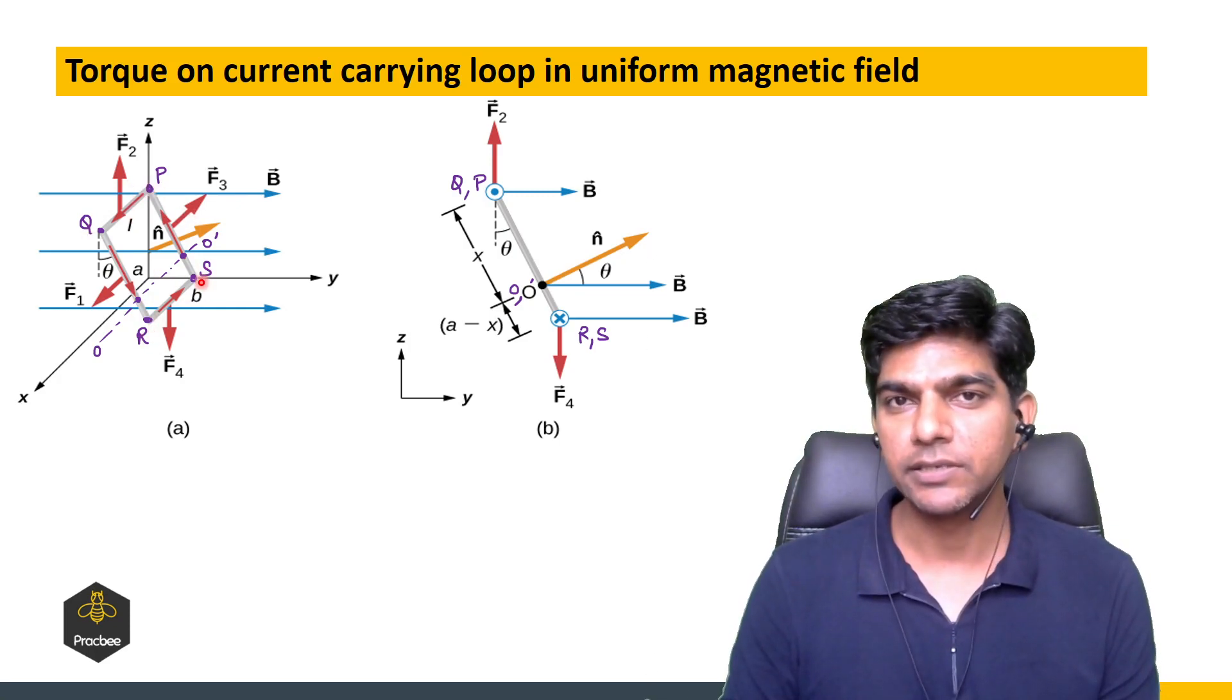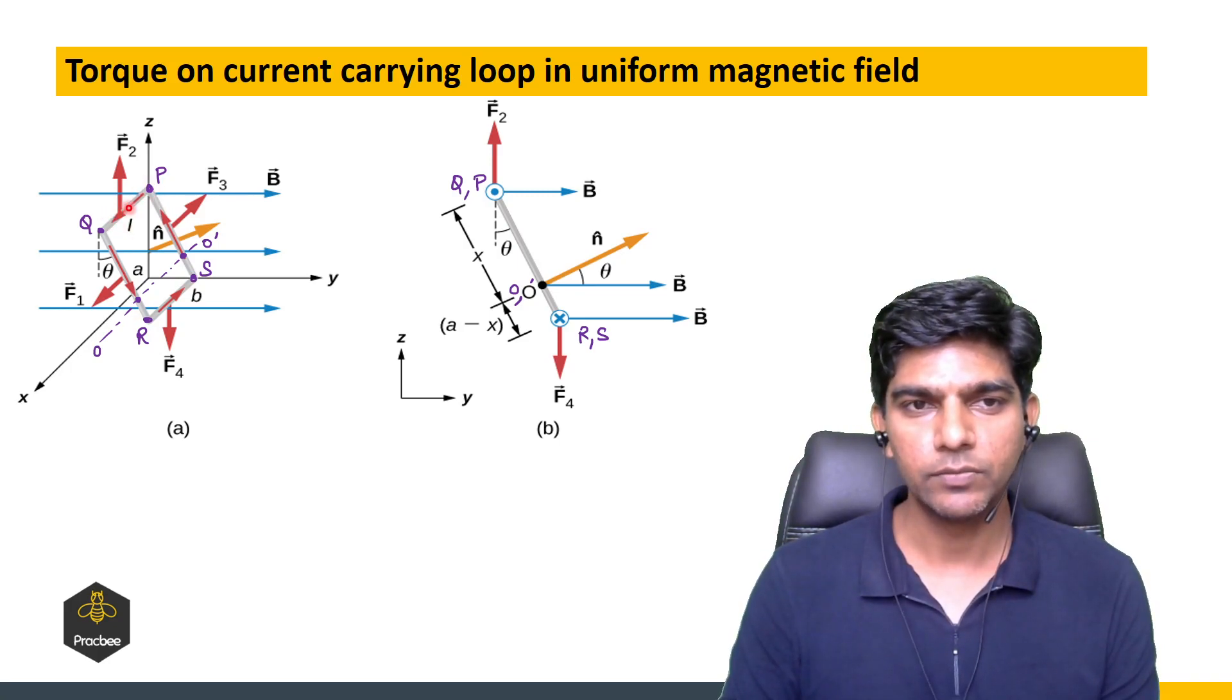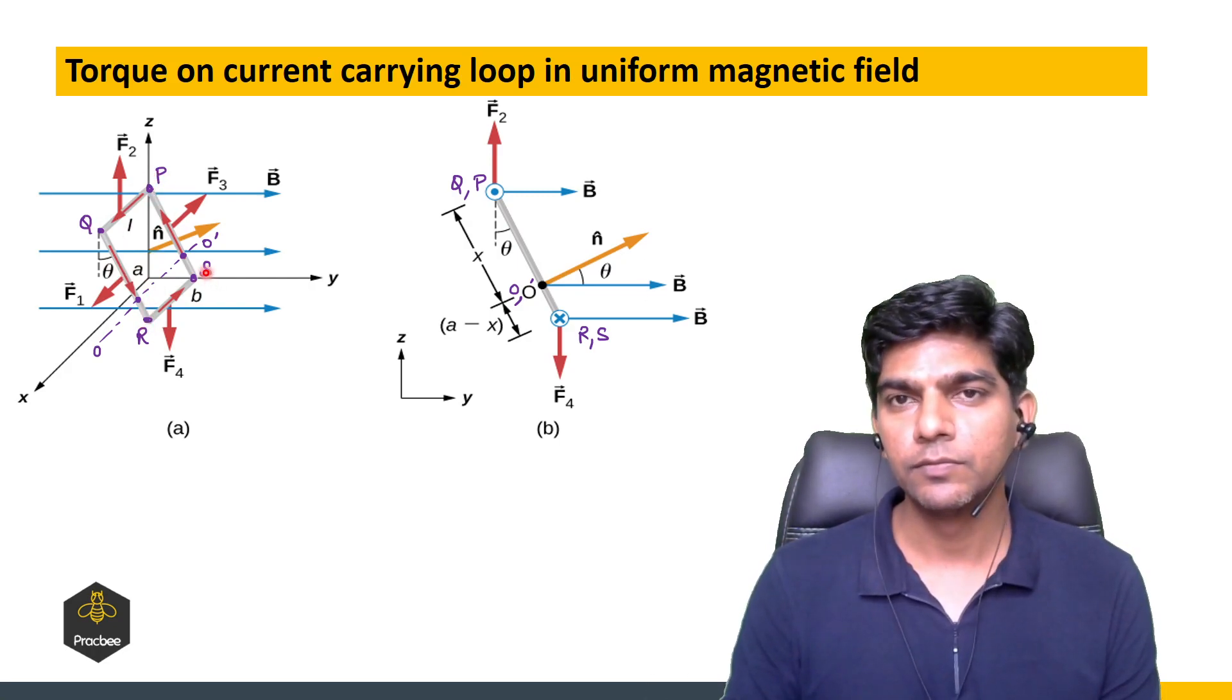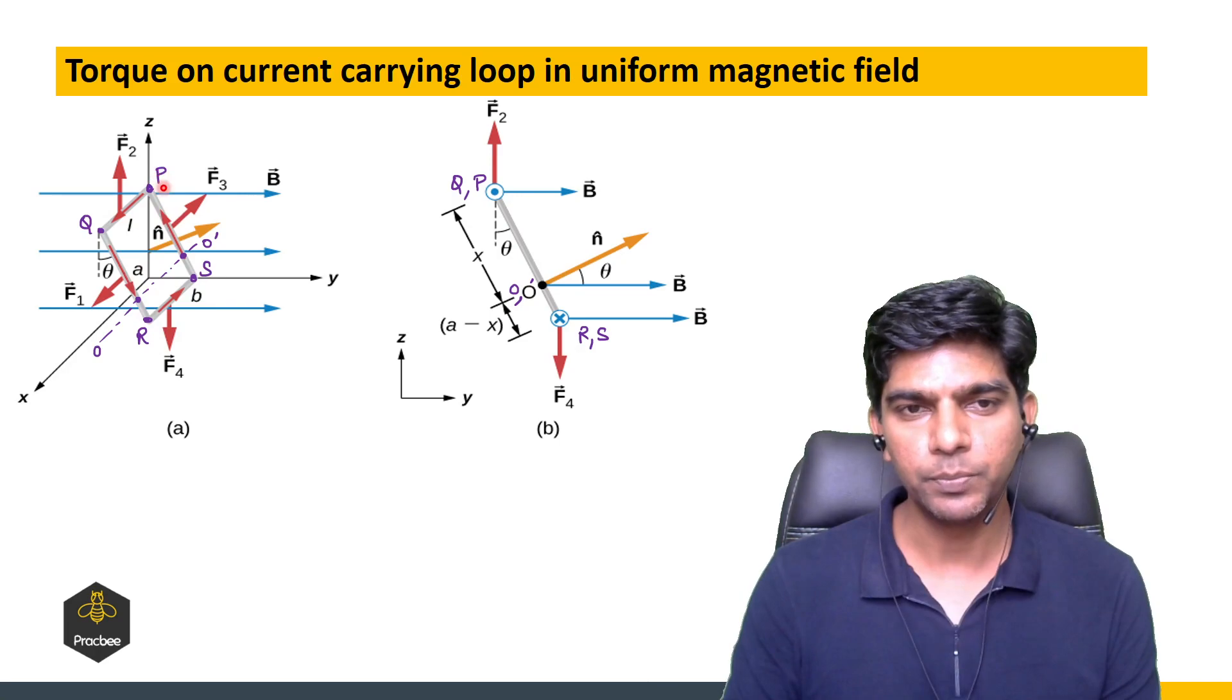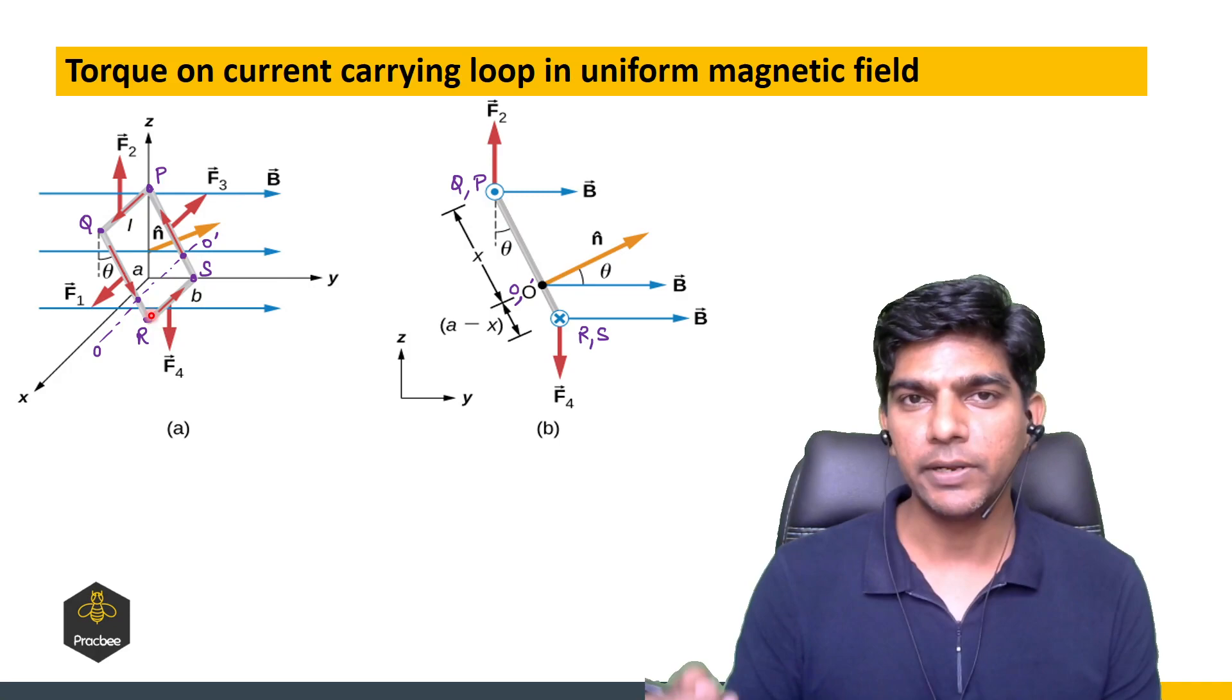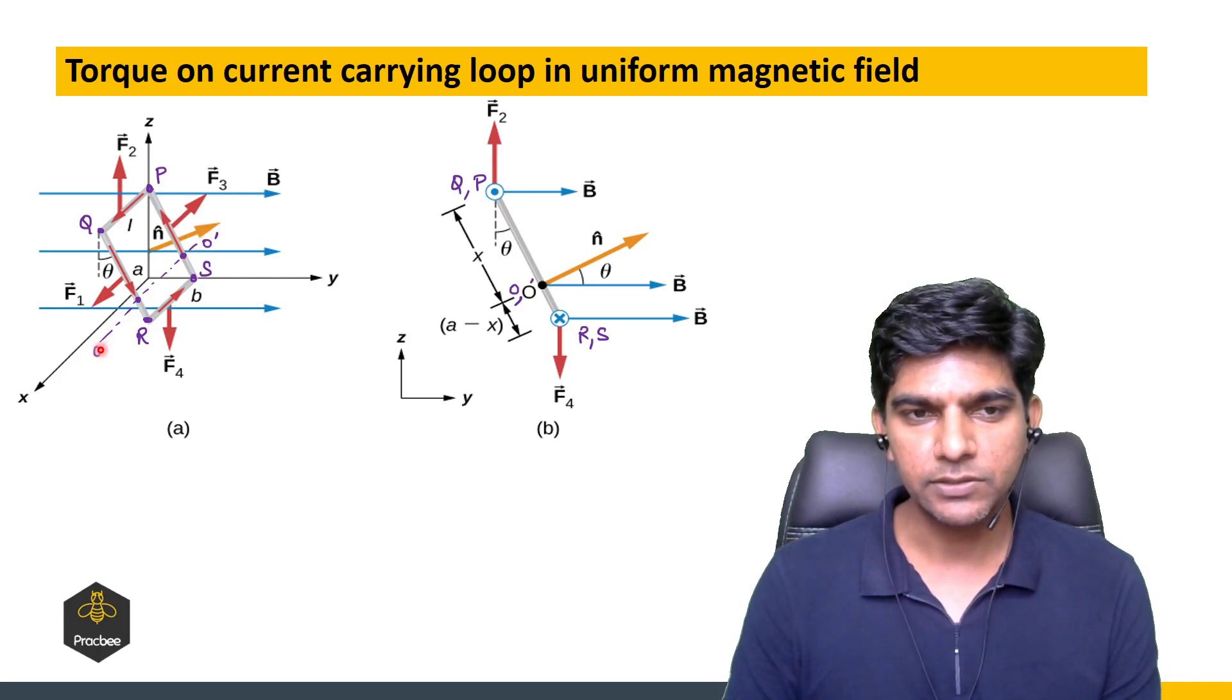The PQ and RS side of this loop is along the x-axis, you can see its direction. QR and PS lie in a plane XZY, and QR is in a plane which is parallel to ZY plane. This loop is constrained to move about an axis OO prime, and this axis is parallel to the x-axis.